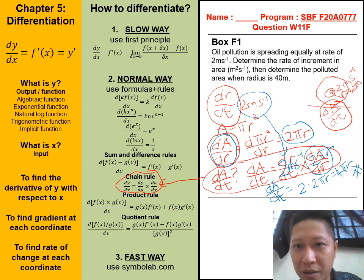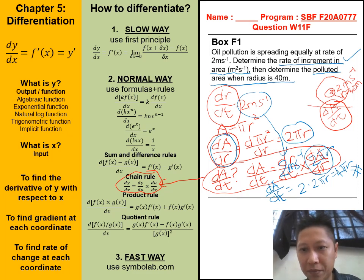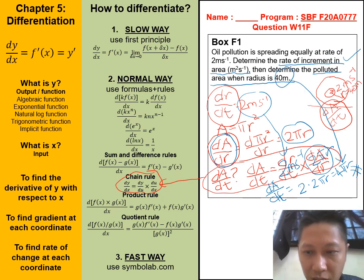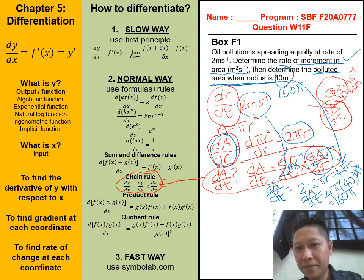So we have solved for the first part. We had determined the rate of increment in area. The next question is we want to find the polluted area when radius increased from 0 meters until 40 meters. We replace the 40 meters into the derivative here. So dA over dt equals to 4 times pi times r, now is 40 meters. So we will get 160 pi. So the polluted area when the radius is 40 meters equals to 160 pi. Done.